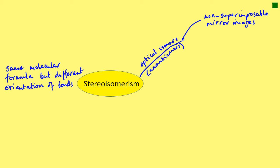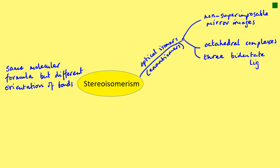Rather like your left and right hands are mirror images of each other that you can't superimpose on top of each other. Optical isomers happen when you have two conditions: one is that you have octahedral complexes — when the complex is an octahedral shape with six coordinate bonds — and they also have to have three bidentate ligands. When you have three bidentate ligands in an octahedral shape, you can have optical isomers.